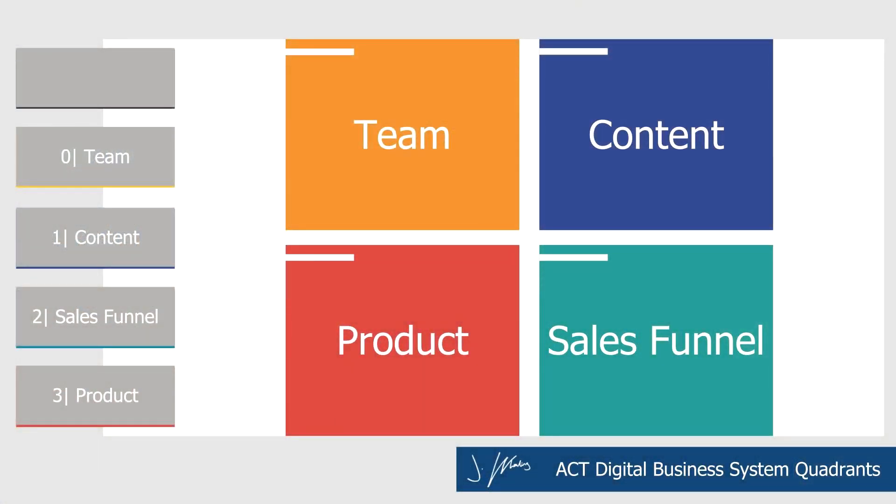So the four digital business quadrants are: team, content, sales funnel, and product. We try to get anything we're working on or any file we have into one of these four main categories.